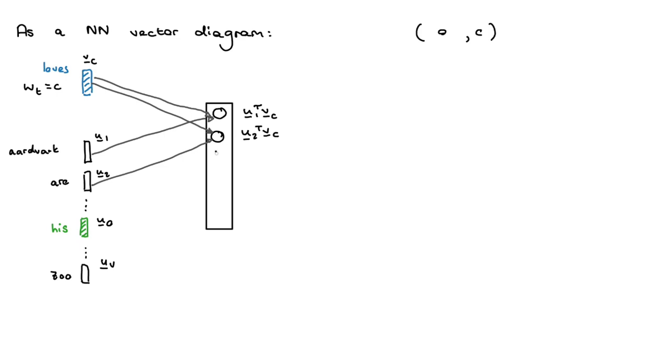You continue in this way, taking the dot product with all the other embeddings. At the end, we have U capital V transpose times my center word embedding. Now all of these are scalars—you're taking dot products, so you're getting scalars.